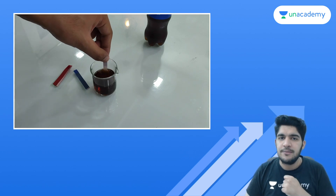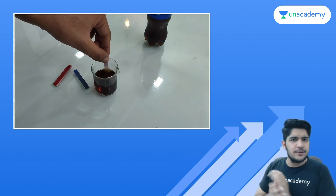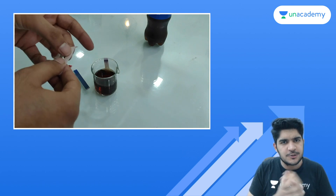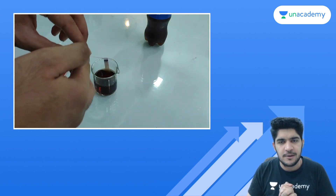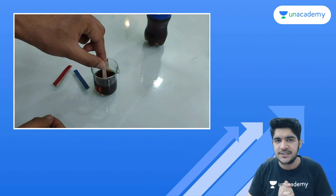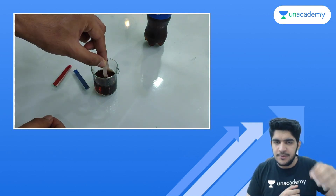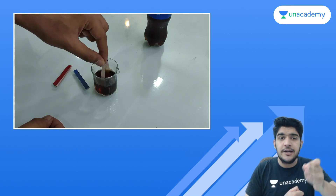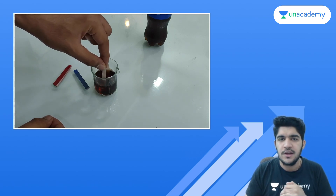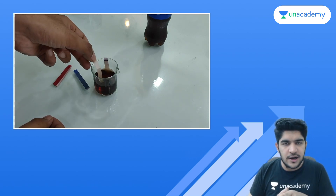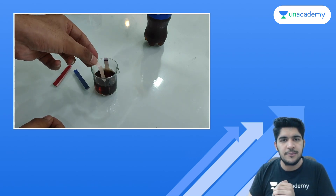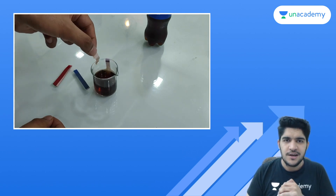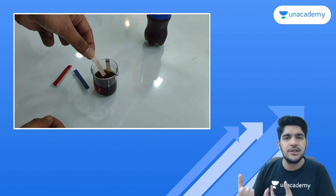Now let's talk about blue litmus paper. What did we do with it in cold drink? Obviously, if we dip it in cold drink, then it will turn red. The red litmus did not change. Let's talk about the pH paper — it's a pH paper. Cold drink is acidic.